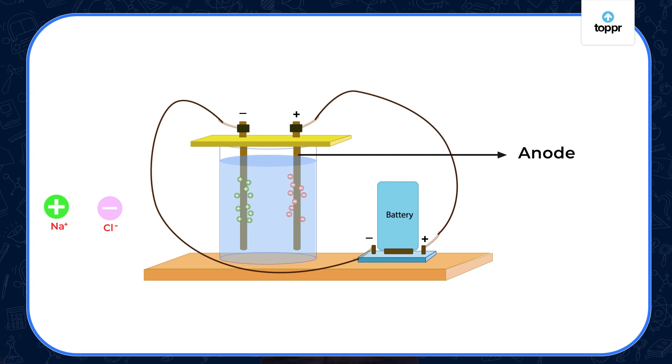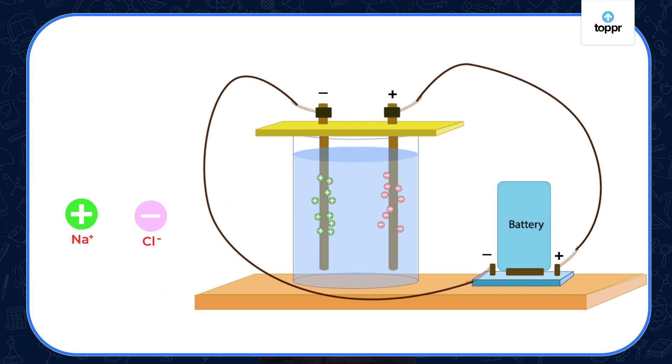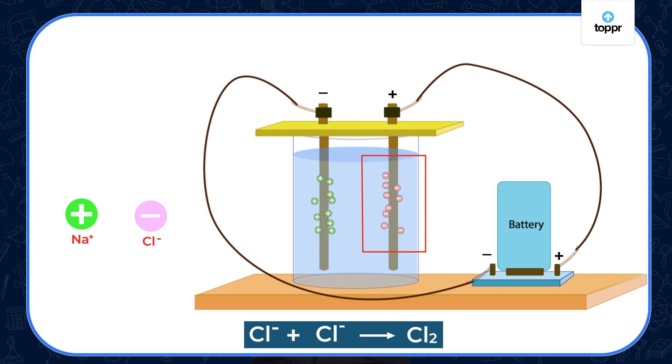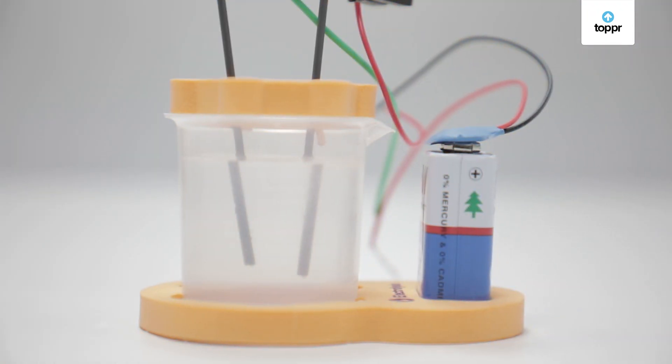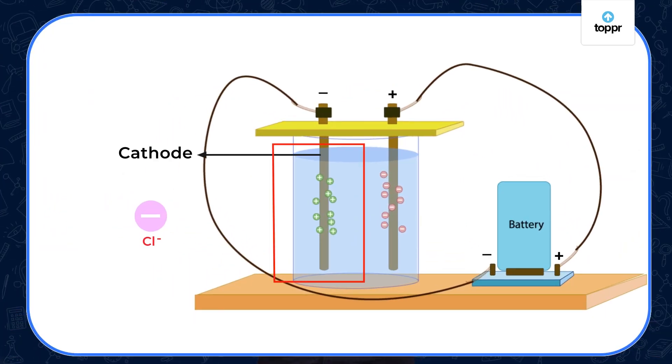Na+ flows towards the rod connected to the negative side, and this rod is called the cathode. The Cl- gets accumulated near the anode. One Cl- combines with another Cl- to form Cl2 or chlorine gas. This is the chlorine gas bubble which we saw near the anode. And on the cathode side, Na+ starts accumulating on the carbon rod. Thus we can say that chemical effects can be caused by an electric current.